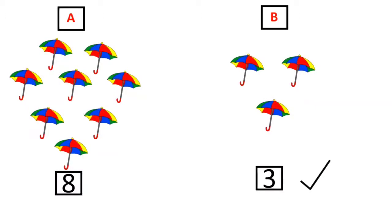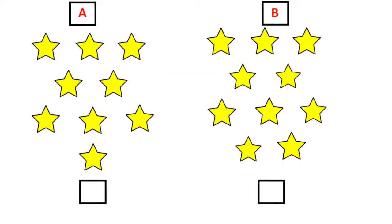Let us move on to the next one. Here you can see 2 sets of stars. Let's start counting set A: 1, 2, 3, 4, 5, 6, 7, 8 and 9. Let's start counting set B: 1, 2, 3, 4, 5, 6, 7, 8, 9 and 10.